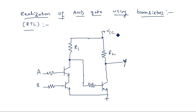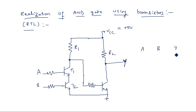Now consider A = 0 and B = 0 (low = 0 volts, high = 5 volts). When both inputs are 0, both transistors T1 and T2 are open-circuited. Then VCC appears at the node, and this VCC is applied as input to the next transistor T3, causing T3 to turn on. When T3 is on, the output is equal to 0.